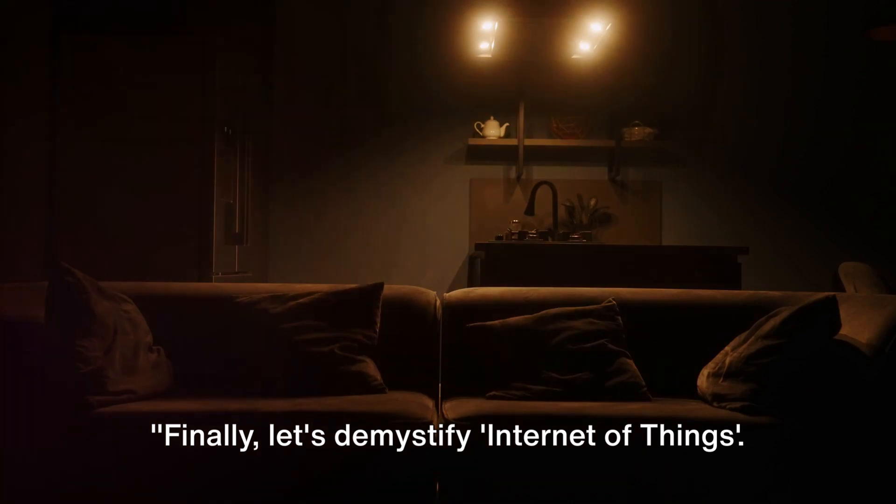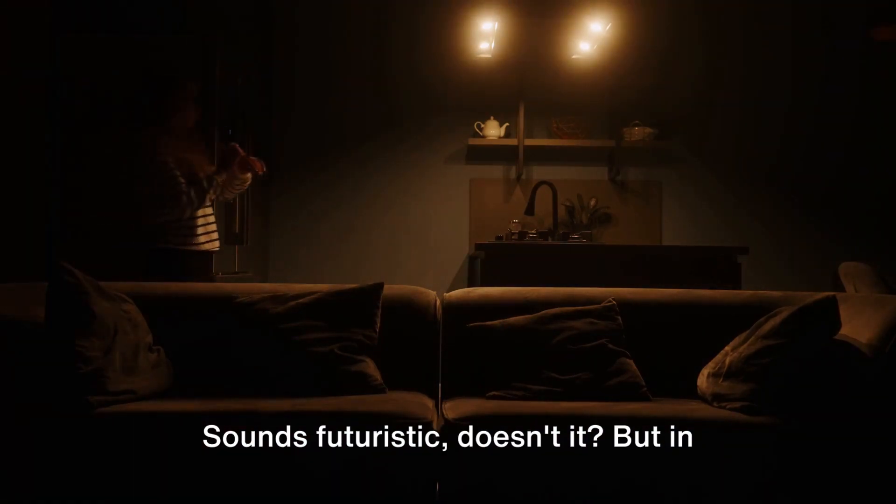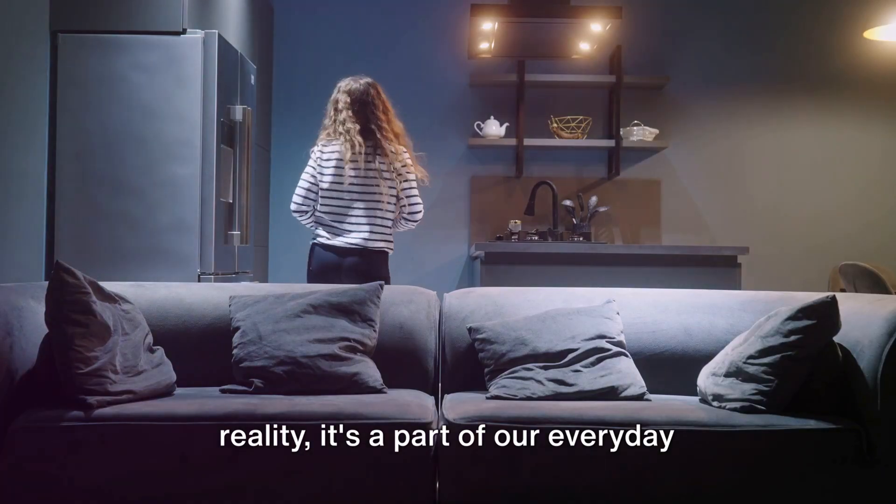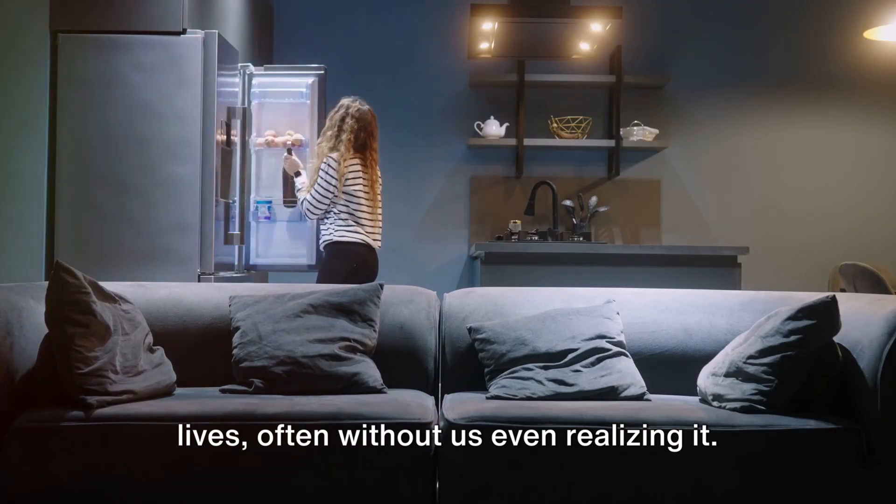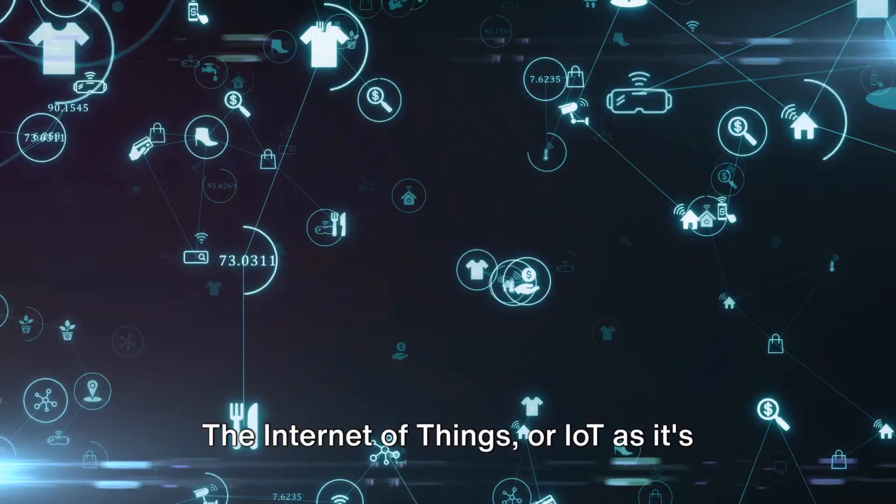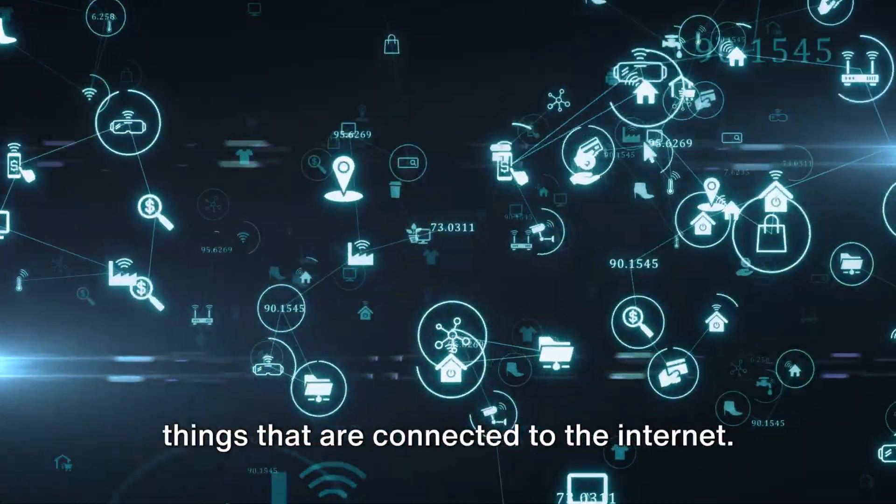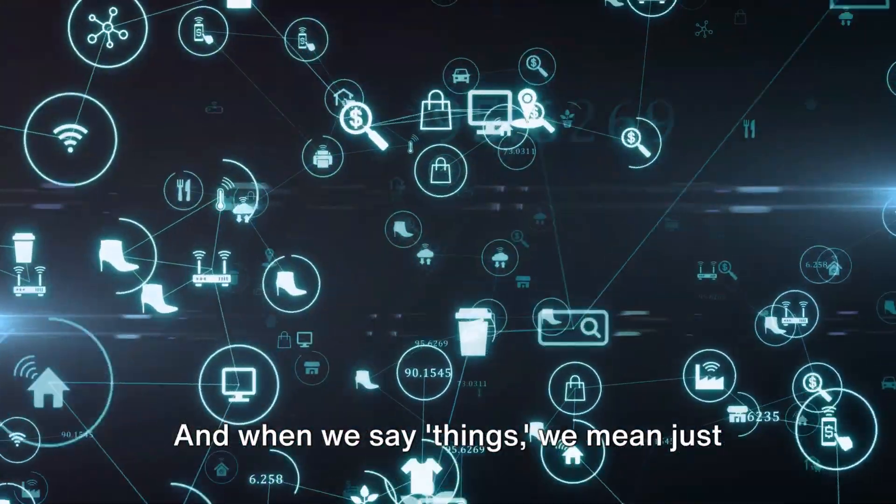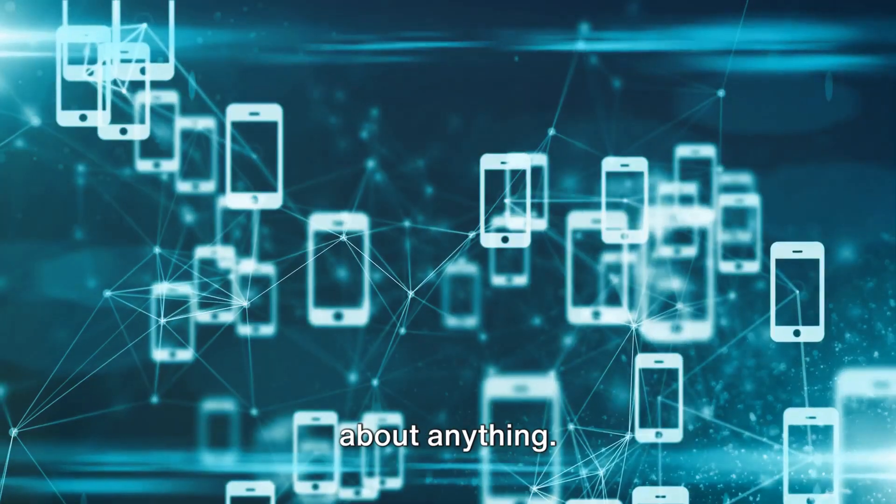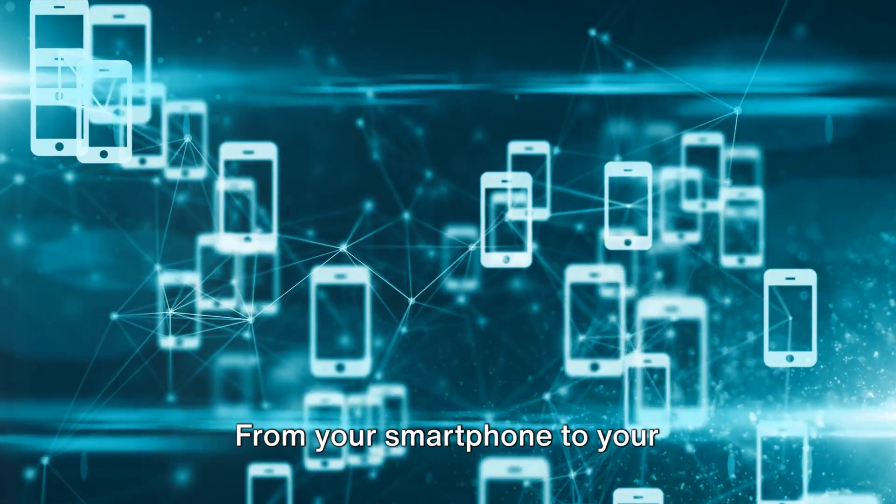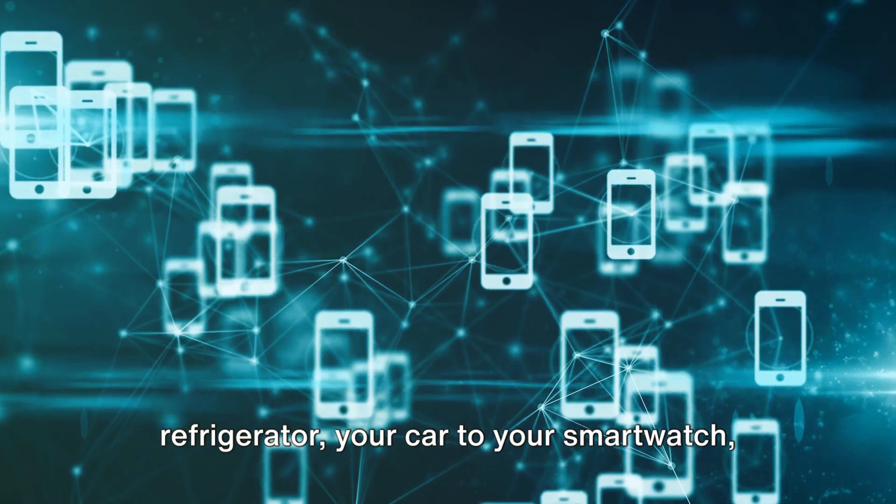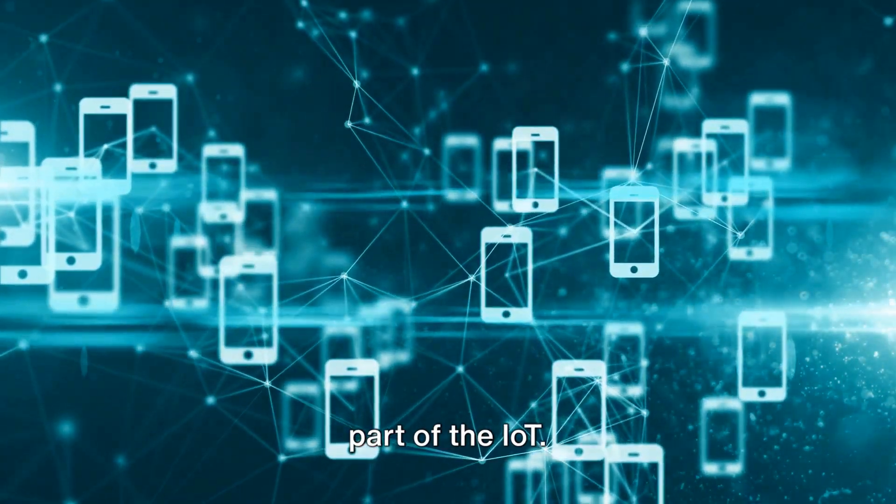Finally, let's demystify Internet of Things. Sounds futuristic, doesn't it? But in reality, it's a part of our everyday lives, often without us even realizing it. The Internet of Things, or IoT as it's often abbreviated, is a vast network of things that are connected to the internet. And when we say things, we mean just about anything. From your smartphone to your refrigerator, your car to your smartwatch. If it's connected to the internet, it's part of the IoT.